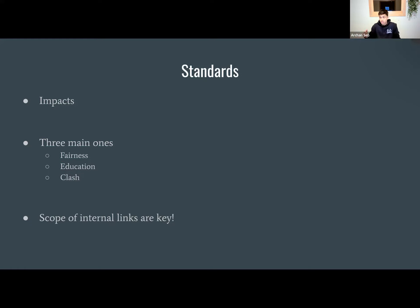So it's kind of like probability, magnitude, timeframe, except now it's in theoretical terms. The last thing I'll say on this before we get into how to actually deploy theory is that the scope of the internal links is key. What this means is basically the amount of fairness they decrease, the amount of education they decrease, or the amount of clash they decrease — this is a critical component that teams rarely talk about. This can easily make or break debates, especially in close rounds.